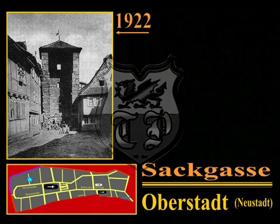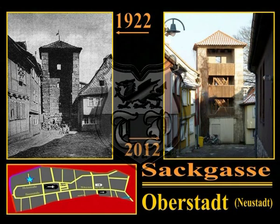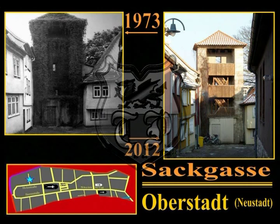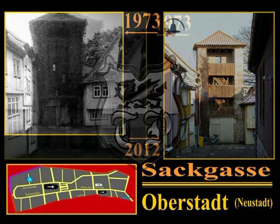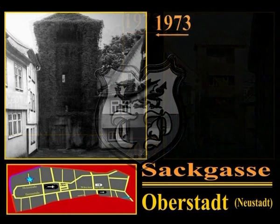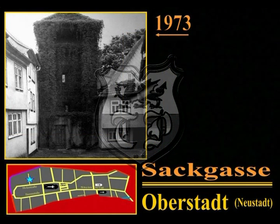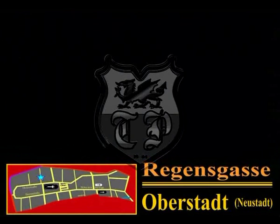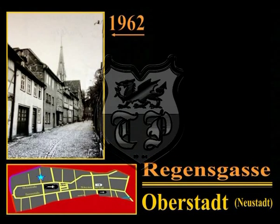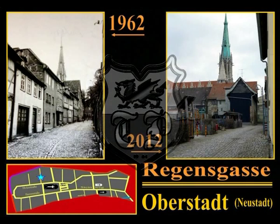Die Sackgasse, an der am Ende der Sackgassenturm steht, ist schon aus Teil 2 von Meim-Mühlhausen (über die Stadtbefestigungen) bekannt; erstmals erwähnt wurde sie im Jahre 1380. Über die Regensgasse wurde ebenfalls schon im Beitrag über die Stadtbefestigungen gesprochen – an ihrem Ende stand bis 1688 ein Wehrturm. Heute ist sie der Endpunkt und Ausgang für den begehbaren Teil der Stadtmauer. Die Regensgasse wurde 1402 erstmals erwähnt und wahrscheinlich nach der Mühlhäuser Familie Regis benannt.